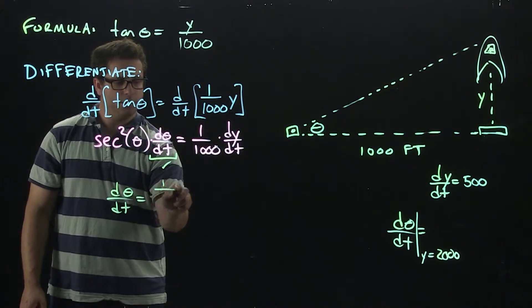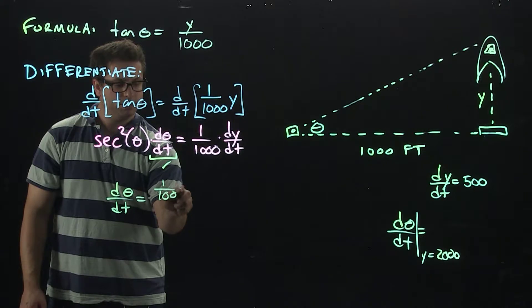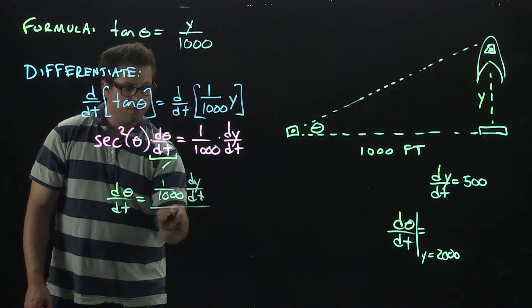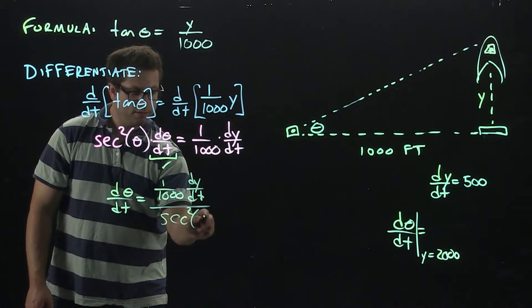So that's going to be 1 over 1,000 dy/dt all over secant squared of theta.